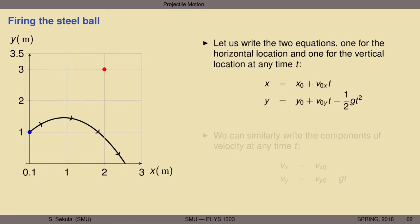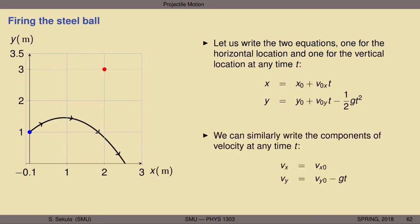So we now have two equations of motion: one for x and one for y at any time t. The horizontal component moves at constant velocity with no acceleration, while the vertical component has a changing velocity due to constant gravitational acceleration. The horizontal velocity is constant for all time; the vertical velocity component's magnitude changes with time, eventually reversing direction to point downward.